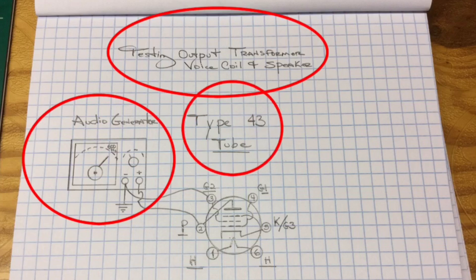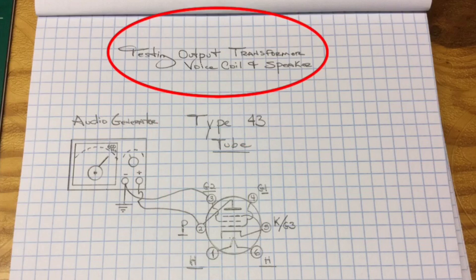My insertion point for the test will be a type 43 tube, which I have highlighted as well. And again, you can see my connection points here. I'll highlight those for you. We'll be coming off of the audio generator itself, back from the plus side over to the plate of the type 43 tube.